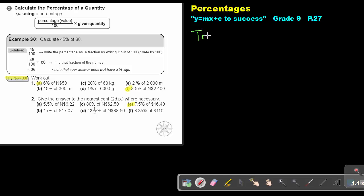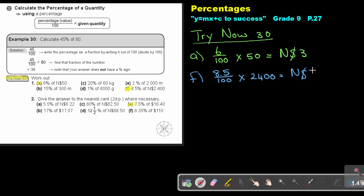Let's start. It's try now 30. If I say 6% of 50, I just say 6 out of 100 times 50, or I can put the dollar there but it's not necessary, and then my answer will be $3. If I look at number F, 8.5%, it's the same: 8.5 divided by 100 multiplied by 2,400, and if I work out that, I'm going to get an answer of 204.